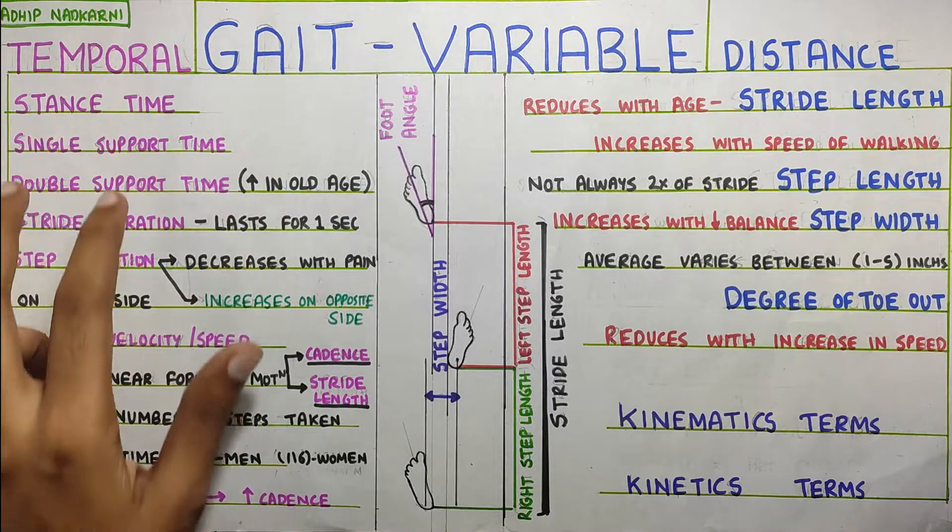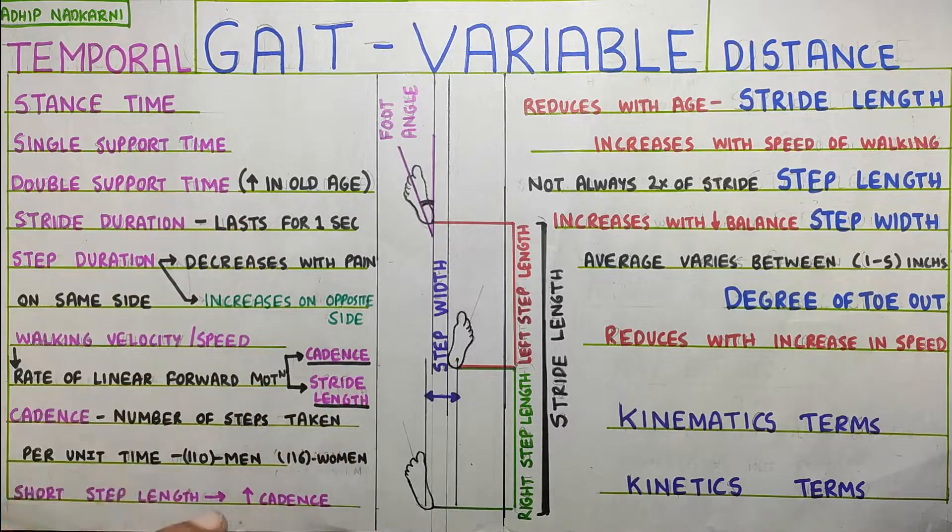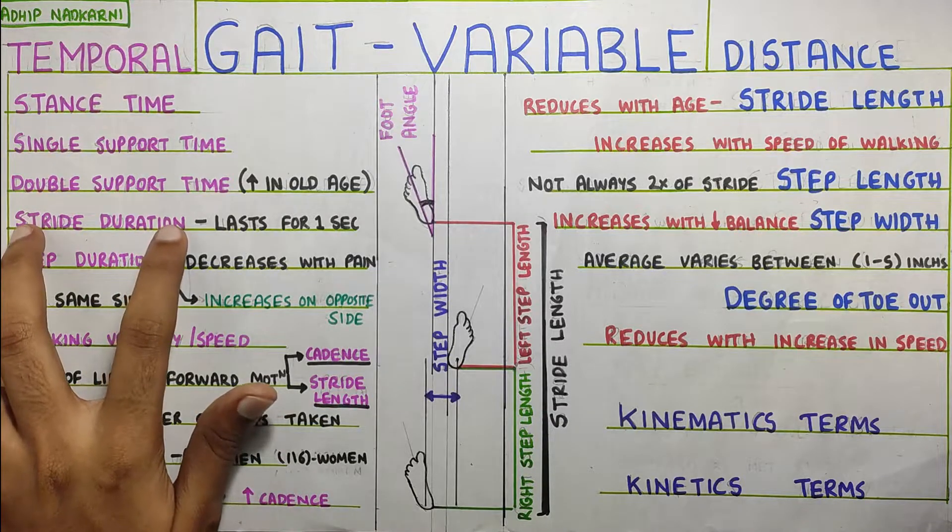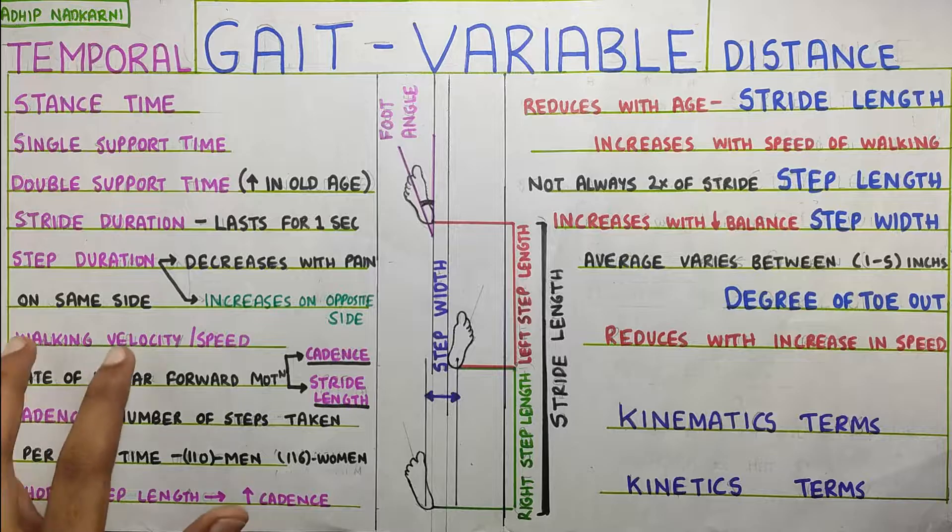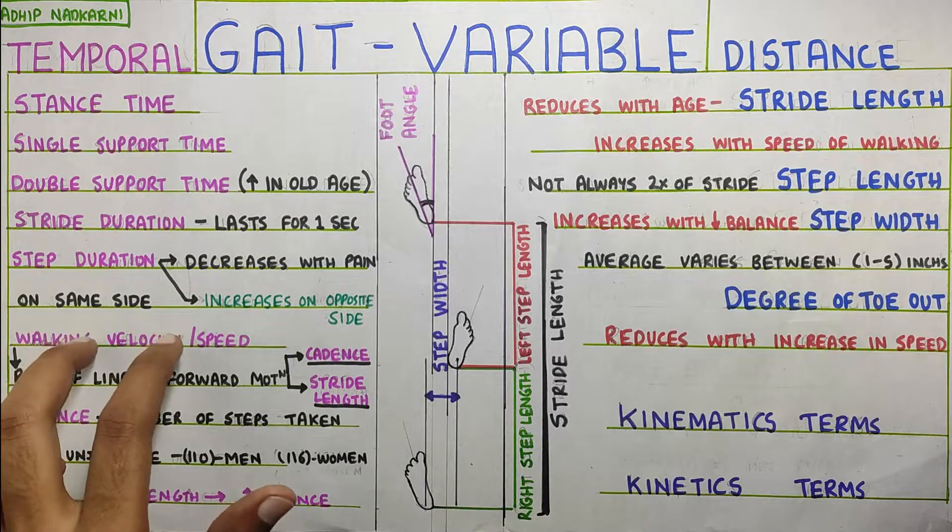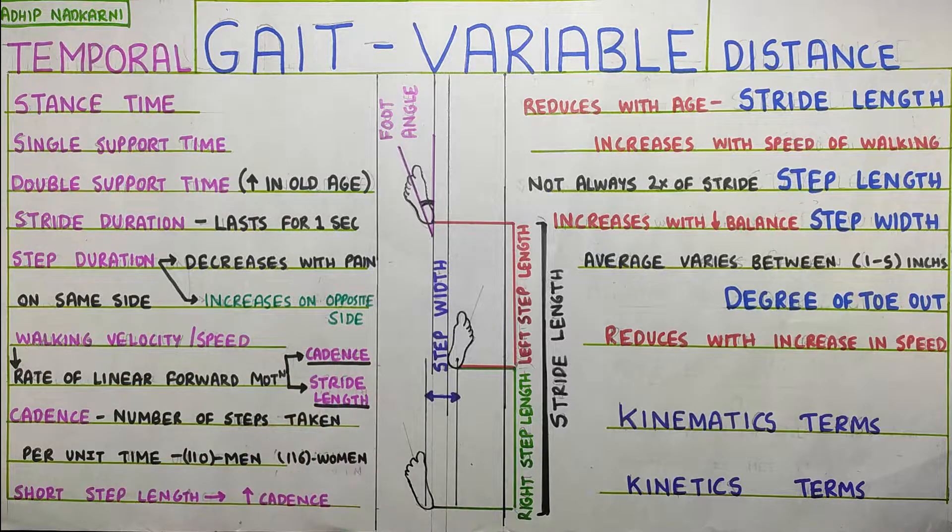So, those were the temporal variables which were dependent on time. The stance time, single support time, double support time. Then, after that we saw stride duration, step duration, after which we saw walking speed or velocity which was dependent on cadence and stride length. Now, let's move on to the distance variables.